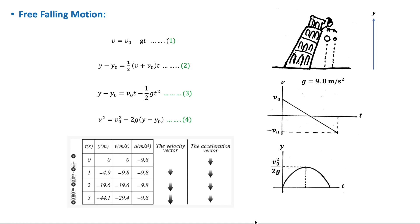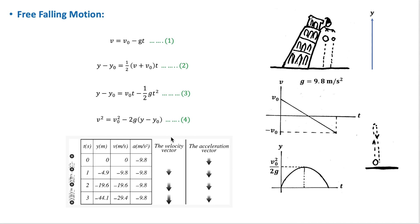This means we can use the same equations derived in the first video of kinematics, which were the equations for motion in one direction with constant acceleration. Because the motion is along the y-axis, we replace x by y, and since the acceleration is directed in the negative y direction, we replace a by minus g.